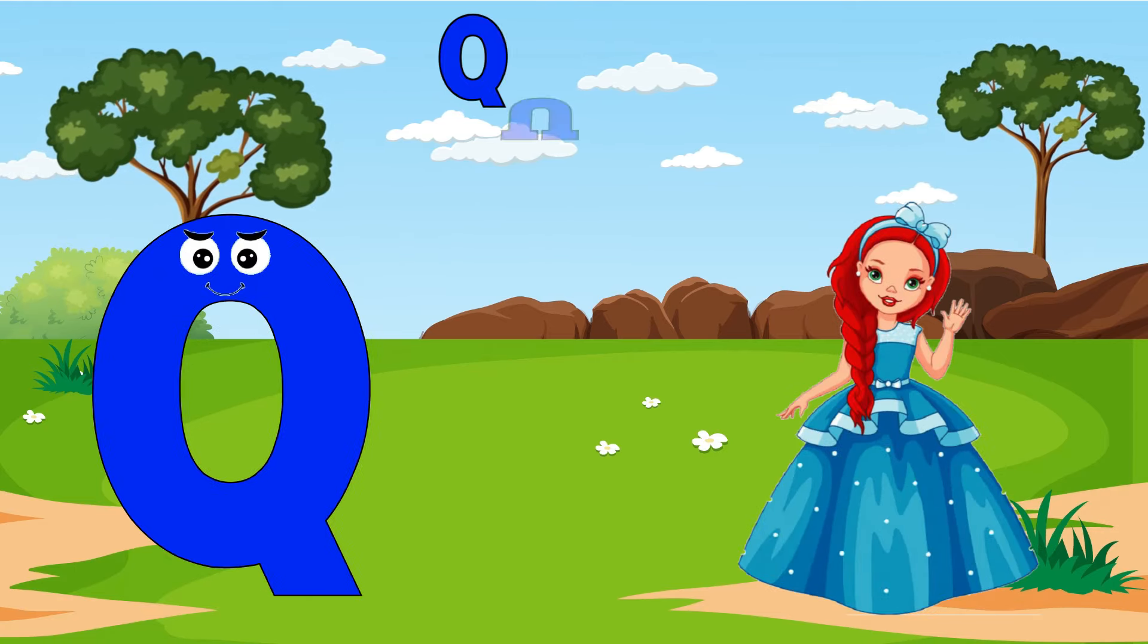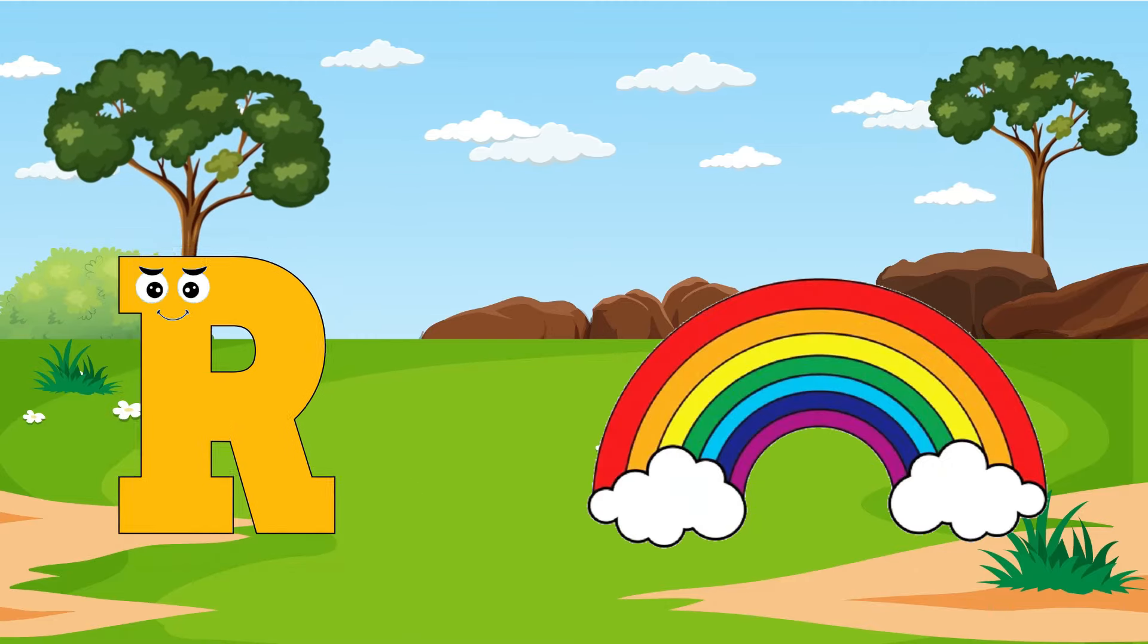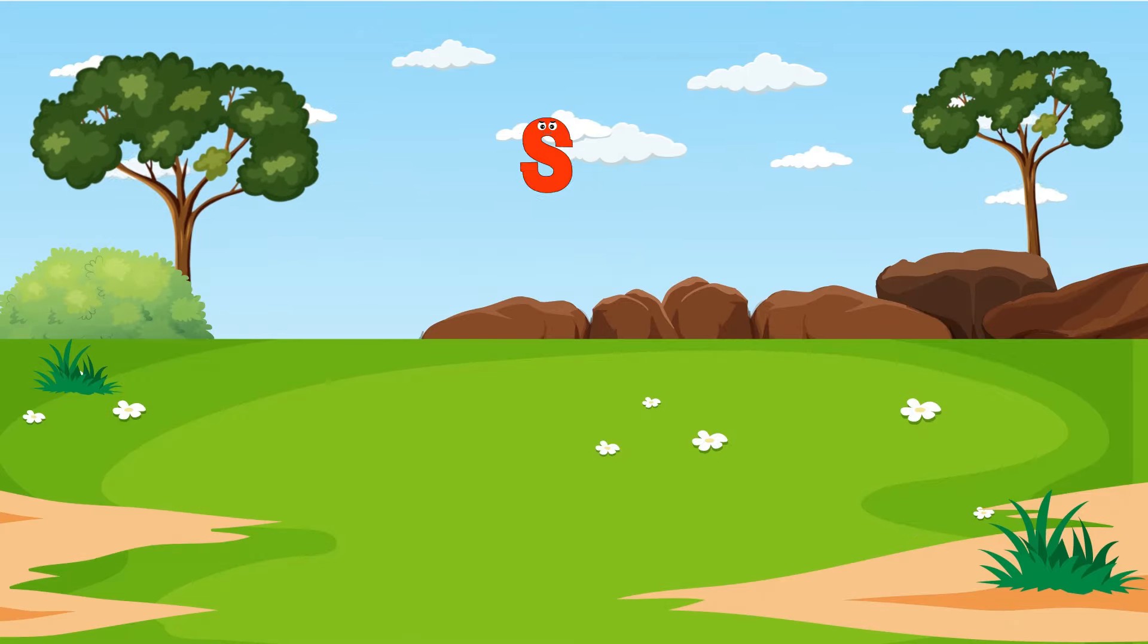Parrot. Q is for Queen, Queen. R is for Rainbow, R, R.